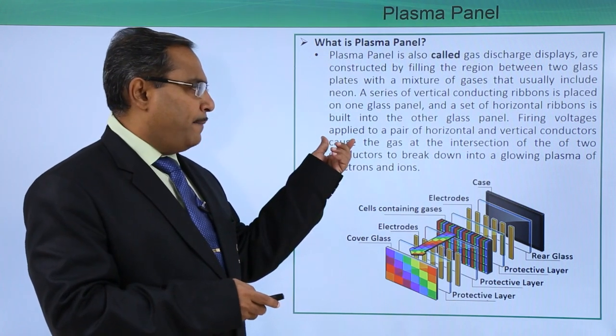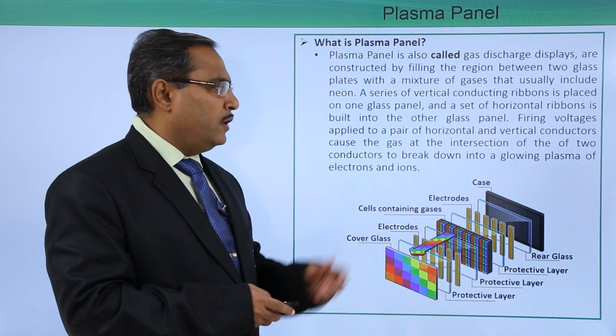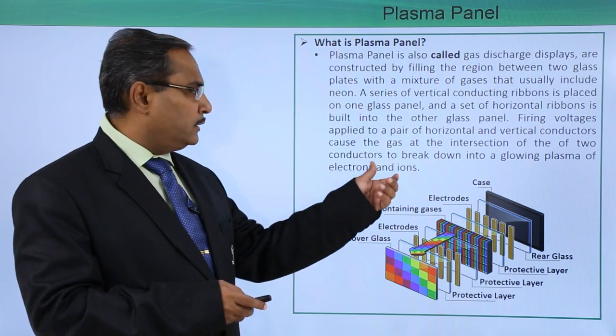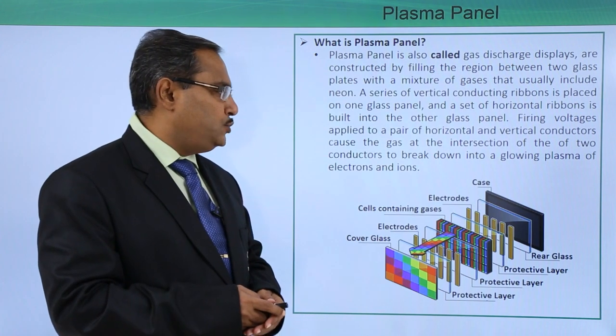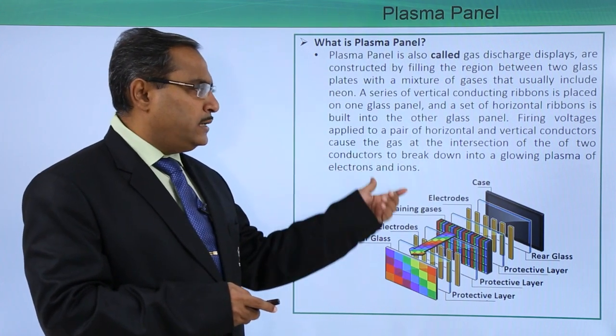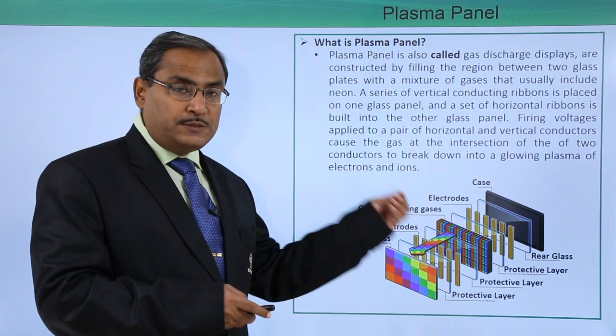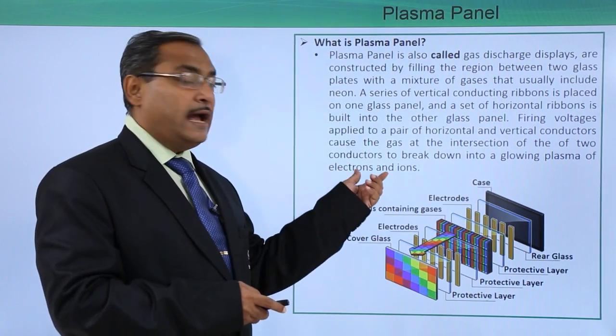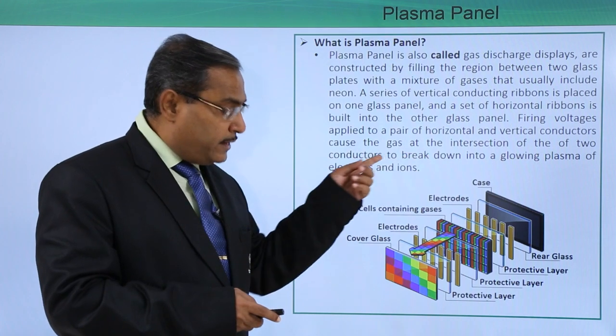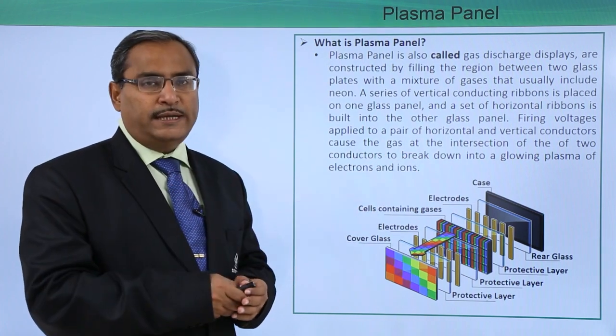The firing voltages applied to a pair of horizontal and vertical conductors cause the gas at the intersection of the two conductors to break down into glowing plasma of electrons and ions. That is the main cause of generation of the image.